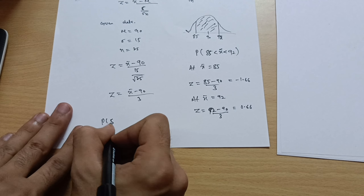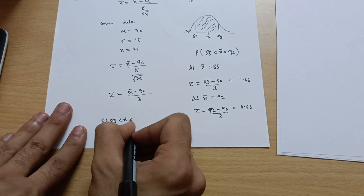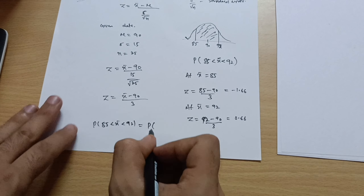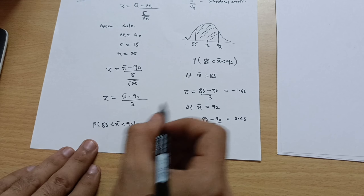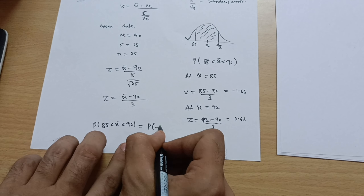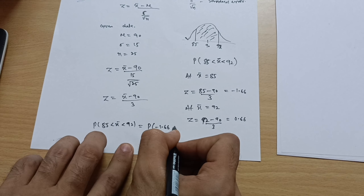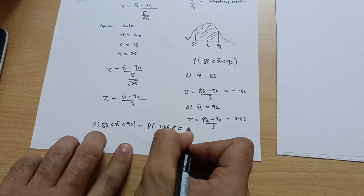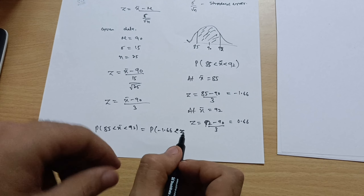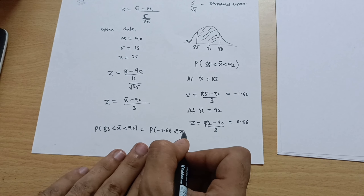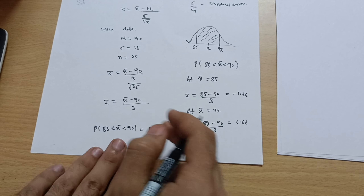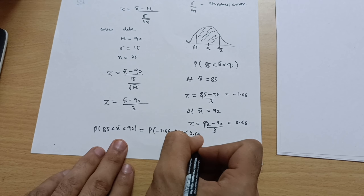So the probability P(85 < x̄ < 92) is expressed as P(−1.66 < z < 0.66). I am converting to z-values because we need to look them up in the standard normal distribution table.